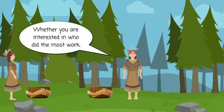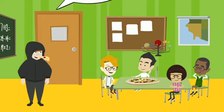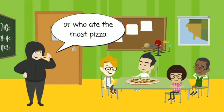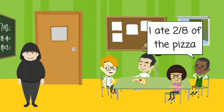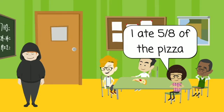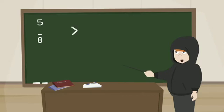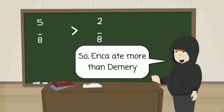Whether you are interested in who did the most work or who ate the most pizza, just compare the top numbers, the numerators. I ate 2 eighths of the pizza. I ate 5 eighths of the pizza. 5 eighths is greater than 2 eighths so Erica ate more. I was very hungry.